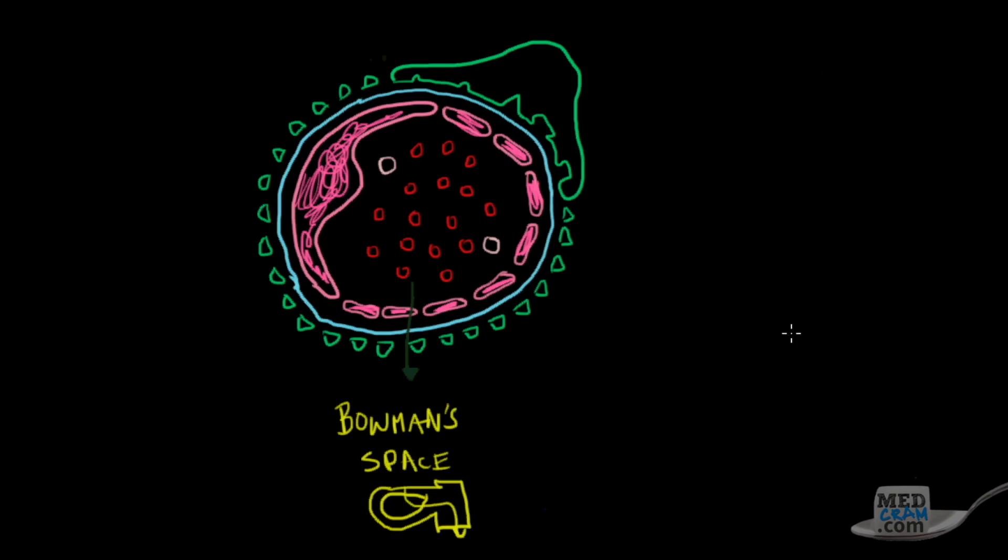If you remember the schematic of what a glomerulus looks like, you've got vasculature that comes in and then leaves, and you've got Bowman's capsule here that picks that up. That gets picked up, goes into the proximal convoluted tubule, down the descending loop of Henle, up the ascending loop, into the distal convoluted tubule, and then into the collecting ducts, and then out again to the toilet.